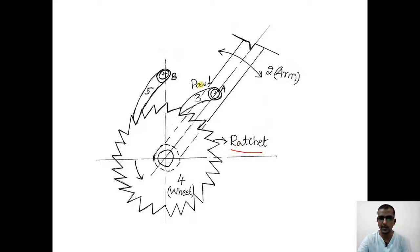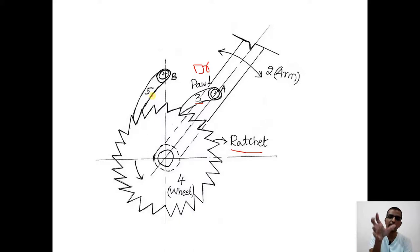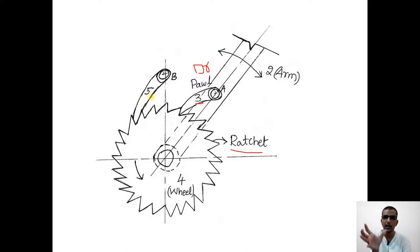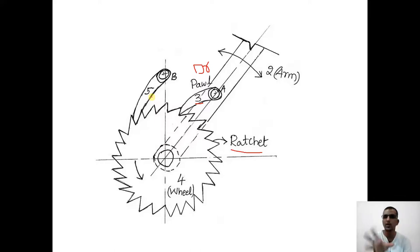There are two pawls: one called the primary pawl (also the driving pawl) and another called the secondary pawl. When the arm rotates — either clockwise or anti-clockwise — it imparts motion to turn the ratchet in the clockwise direction. The duty of the secondary pawl at B is to make sure that the motion does not get reversed, ensuring the ratchet does not rotate in the opposite direction.